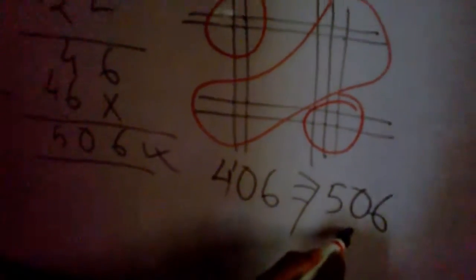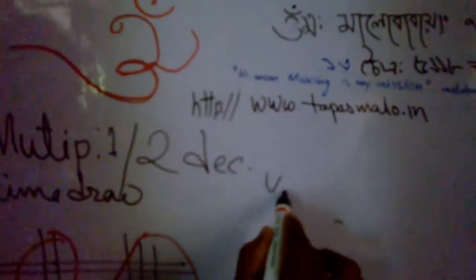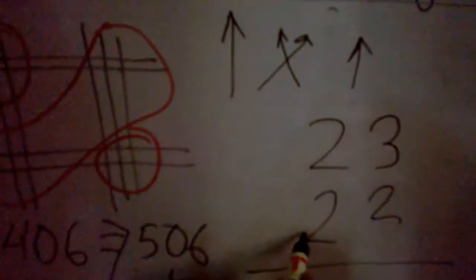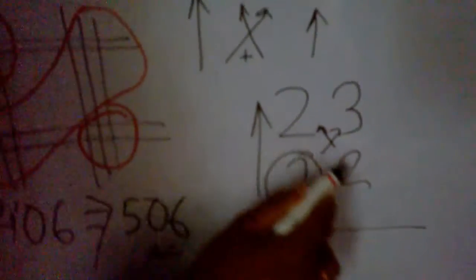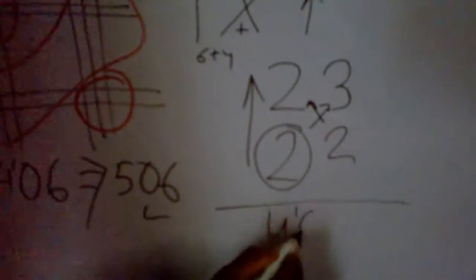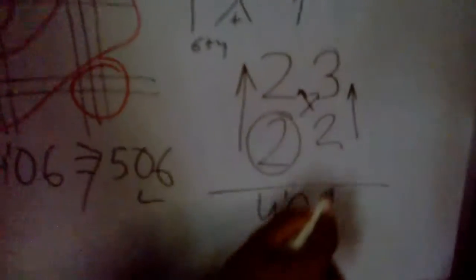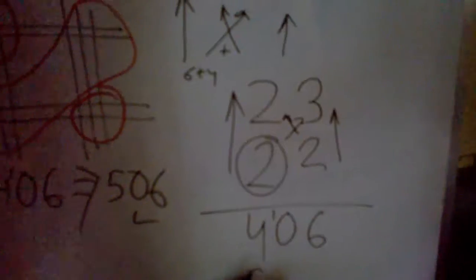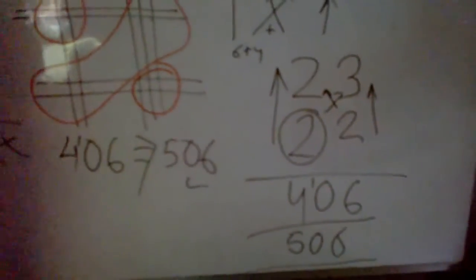Again there is Urdhva Tiryagbhyam method. How it says: you have to go first arrow, then cross arrow, then second arrow. Two, three, two, two. First number you go up: 2 times 2 is 4. Then cross section: 2 times 3 is 6, 2 times 2 is 4, 6 plus 4 equals 10. Ten means zero, one. Then 3 times 2 is 6. So the answer is 5 0 6.